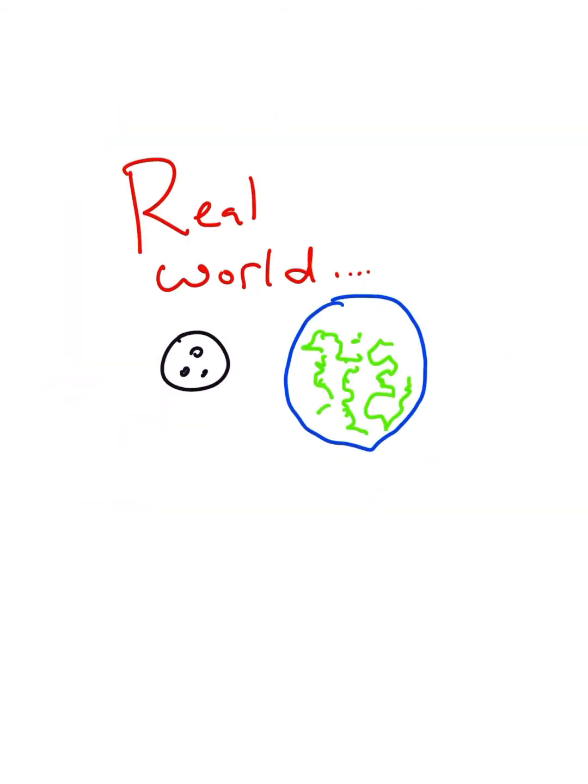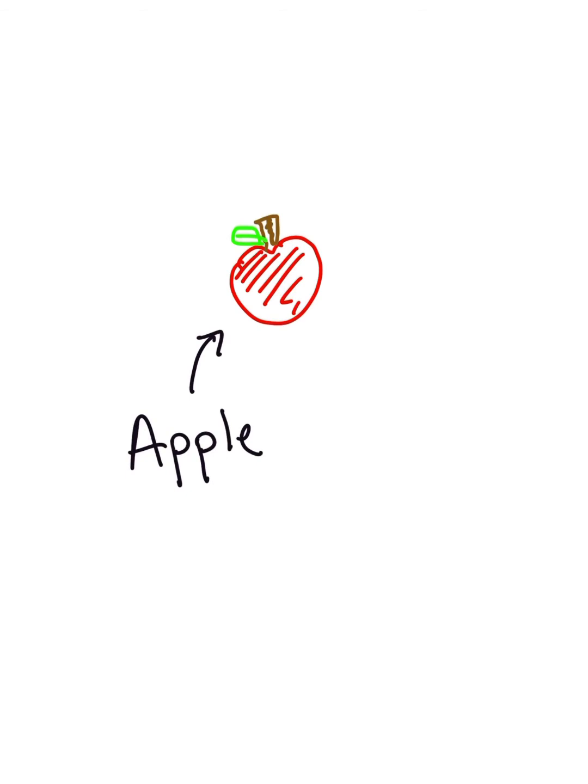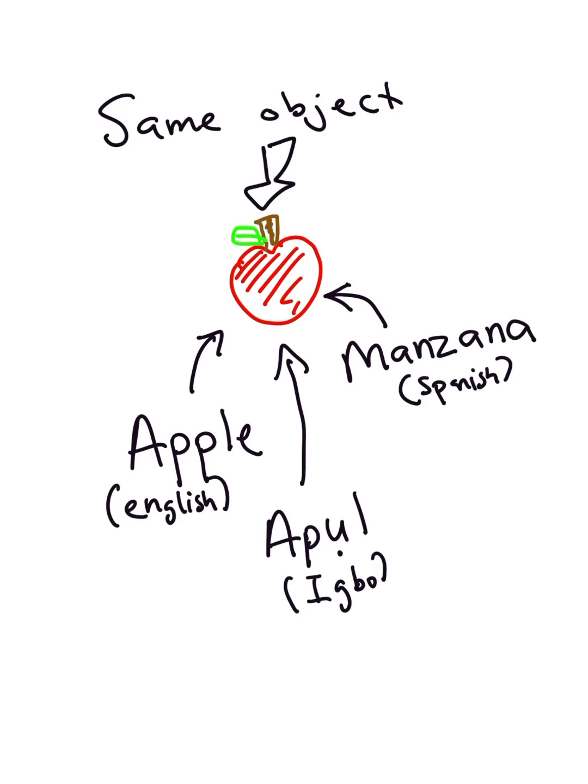In order to understand Hamiltonian mechanics, we need to talk about what are called mathematical arenas. In the real world, we are able to describe the same object in different languages. We can describe an apple in English as manzana in Spanish, or apple in Igbo. We are describing the exact same thing, just differently, in different languages.